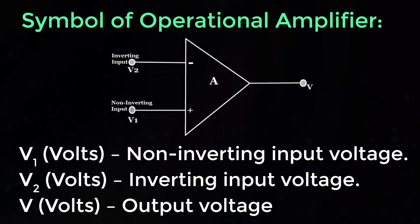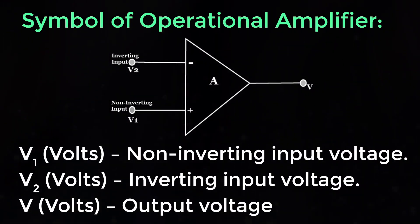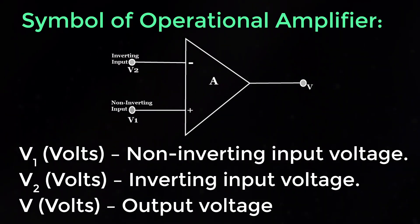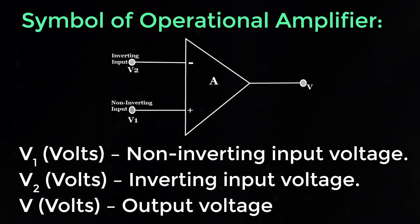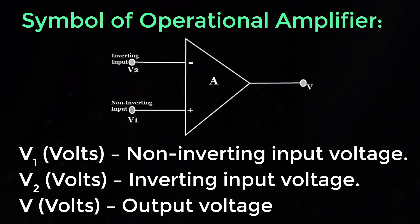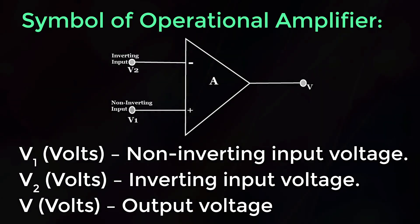Symbol of Operational Amplifier: V1 Volts is the non-inverting input voltage, V2 Volts is the inverting input voltage, and V Volts is the output voltage.